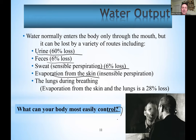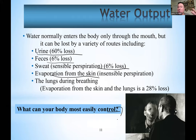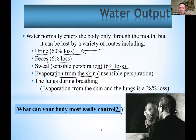Which of those outputs can your body regulate the most? It's urination. One of the great dangers in heat stroke is you stop sweating because your body has no water to give, and then your temperature goes dangerously high. But we just talked about how we can pee out watery urine or very concentrated urine — that's the one we really control. We can't breathe out less moisture.